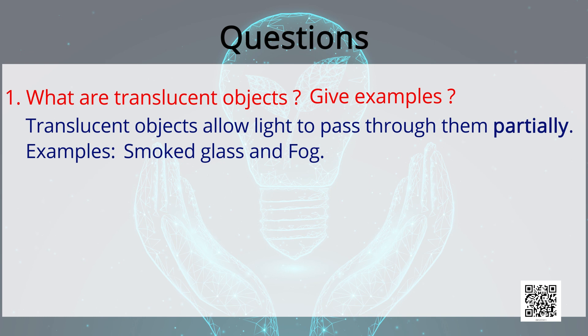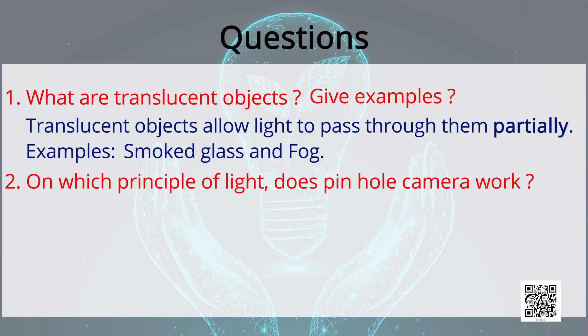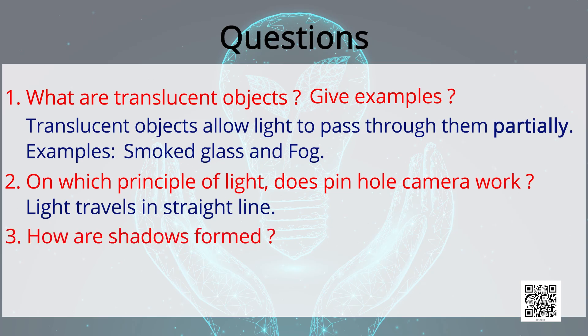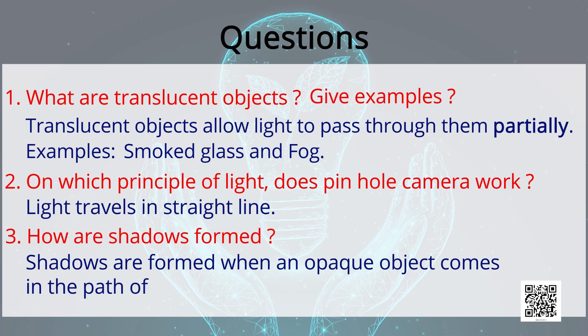My next question. On which principle of light does pin-hole camera work? And the answer is pin-hole camera suggests that light travels in straight line. My next question is how are shadows formed? Shadows are formed when an opaque object comes in the path of light.